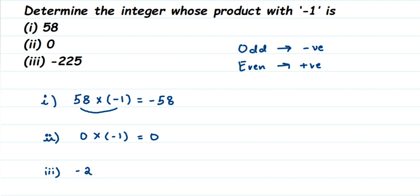The next question is -225 multiplied by -1. Like I said before, first multiply the numbers, so 225 multiplied by 1 gives us 225. Now count how many negative signs you have. You have two negative signs here, right? So 2 is an even number, which means the final answer will be positive.